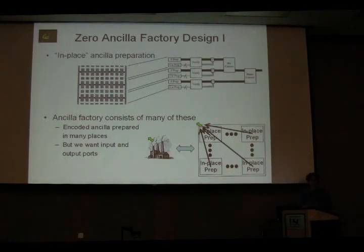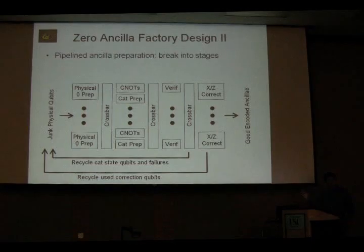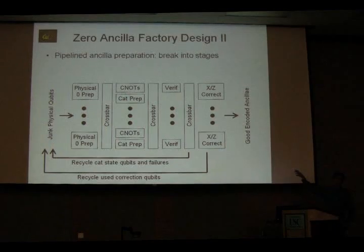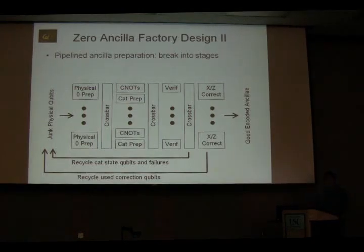However, this means ancilla are being generated all over the factory — routing them over different distances suffers different decoherence, and there's congestion. So in order to get our output ports, we're going to use a classical technique called pipelining, which involves taking that circuit and breaking it into stages. The first stage has all the physical zero preparers — both for the logical zero encode and for the cat states — and we group the Hadamards into that stage. The second stage has the CNOTs for the logical zero prepare and the CNOTs for the cat prep.